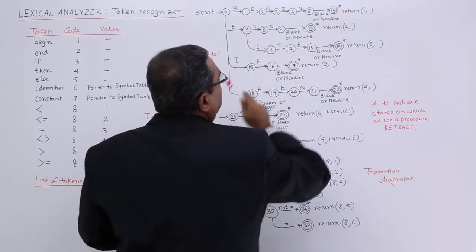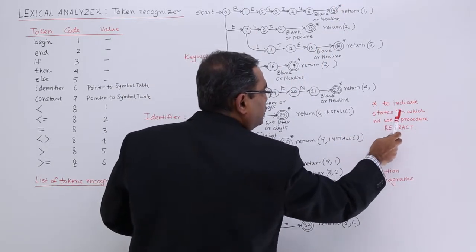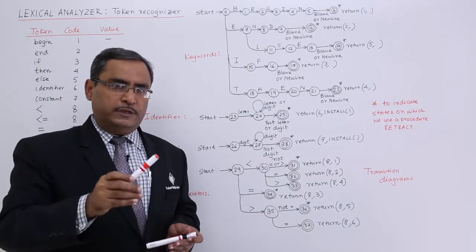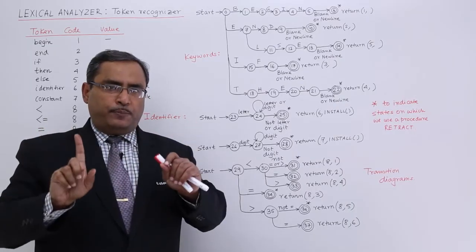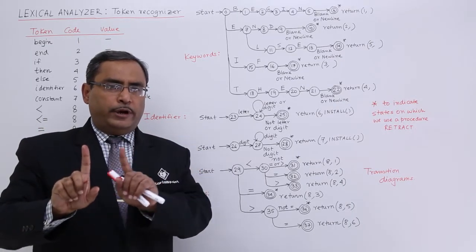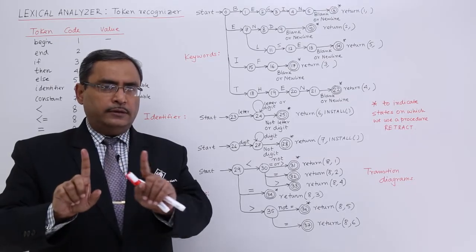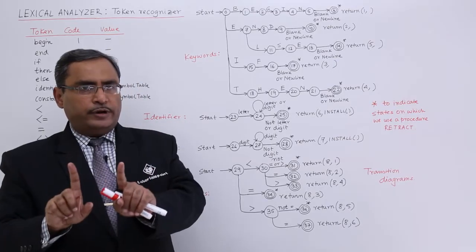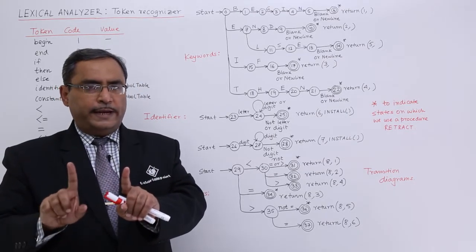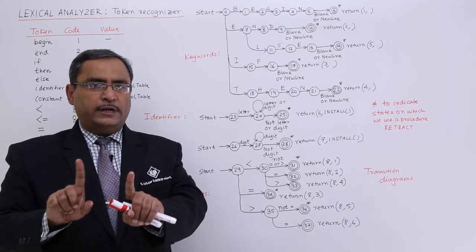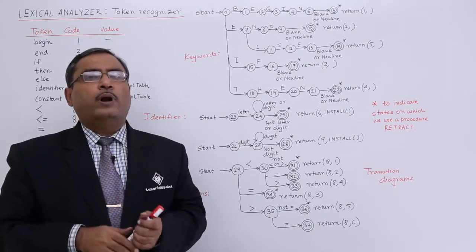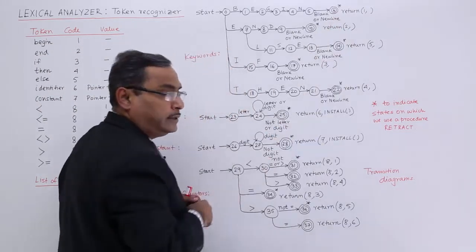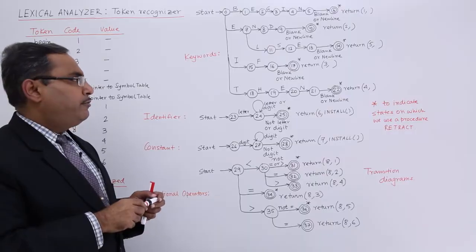Now what about this star? Star indicates states on which we use a procedure retract. In our earlier videos we discussed that there will be one input buffer and the pointer will be the token beginning pointer, another pointer will be going in front. When it gets a delimiter then it should retract, and from the beginning of this token and this look ahead pointer in between, it will try to analyze one token. This star indicates that in this particular state it must be doing the retract operation.